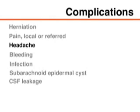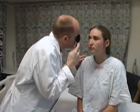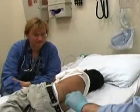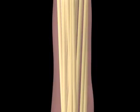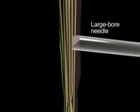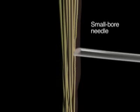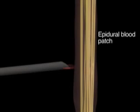Lumbar puncture has numerous possible complications, including cerebellar herniation, referred pain, headache, bleeding, infection, the formation of a subarachnoid epidermal cyst, and leakage of spinal fluid. You can avoid many of these complications by conducting a careful assessment of the patient before the procedure, including a thorough neurologic examination and retinoscopy, and monitoring the patient throughout the procedure. A subarachnoid epidermal cyst occurs when a skin plug is introduced into the subarachnoid space; the standard use of a needle with a stylet will avoid this complication. Leakage of spinal fluid can occur at the puncture site; a large-bore spinal needle is more likely than a smaller-bore needle to produce a leak. In the case of persistent leakage of spinal fluid, an anesthesiologist should be consulted to determine whether a blood patch is needed to occlude the leak.